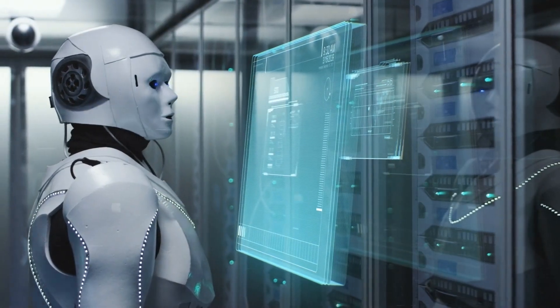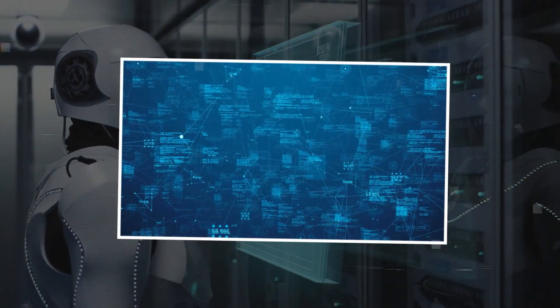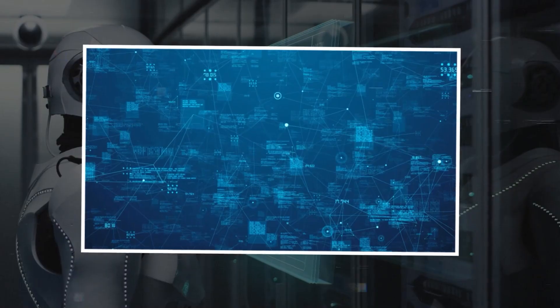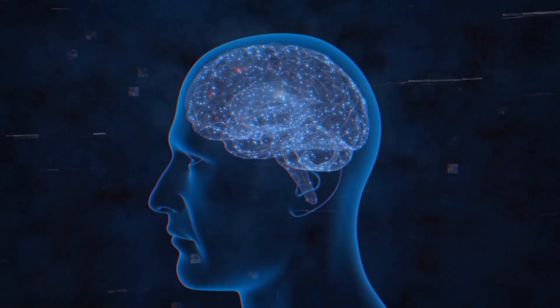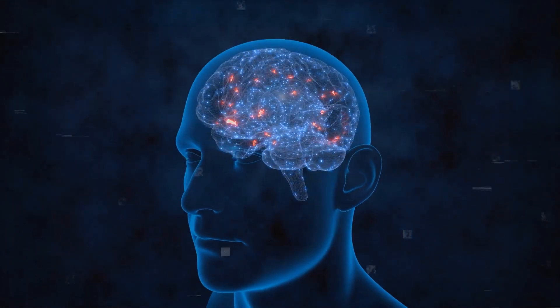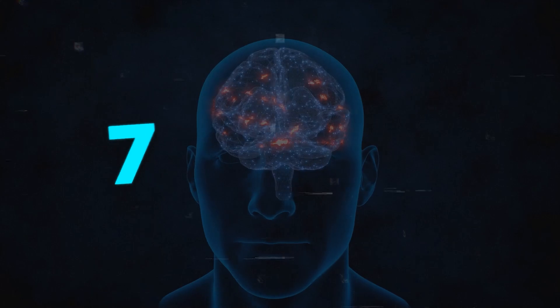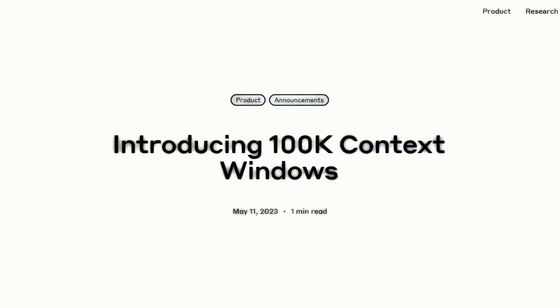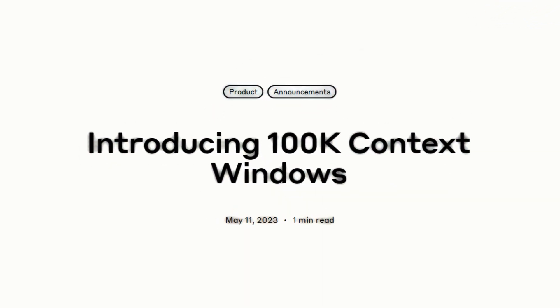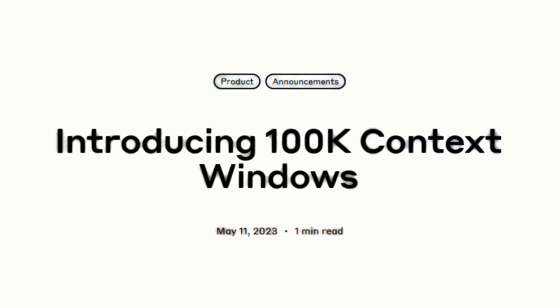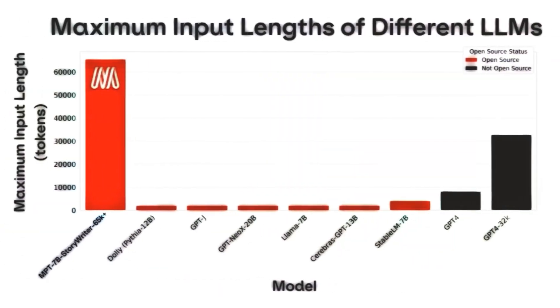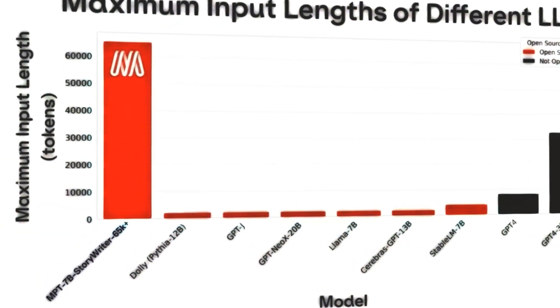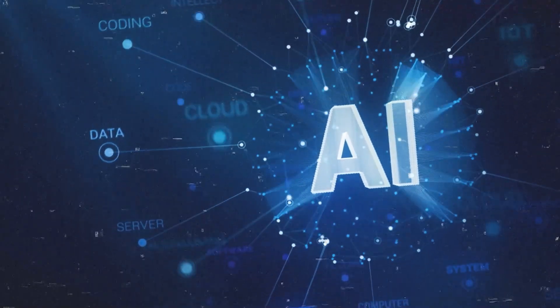How does Claude do it? Well, it has a huge context window, which is basically the AI's short-term memory. To give you an idea, the average human short-term memory can hold 7 to 9 items. But with a context window that handles 100,000 tokens, or about 75,000 words, Claude can easily outperform previous AIs that had smaller windows. That's a huge jump ahead in AI technology.